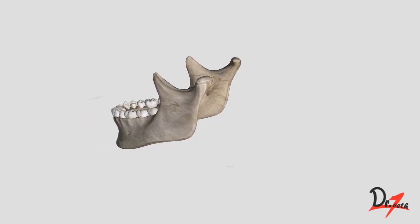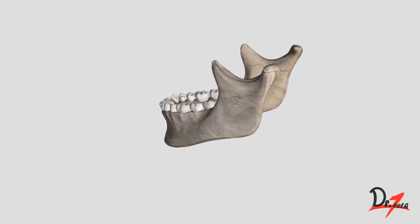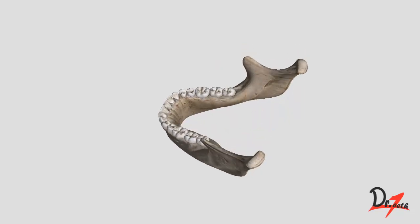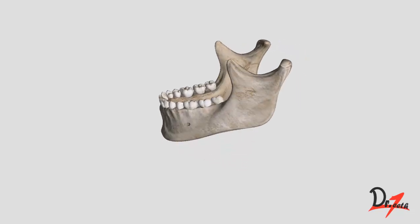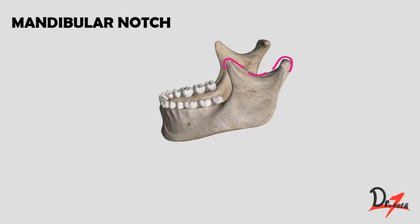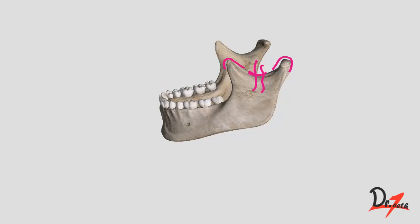The superior border of the ramus is thin, with an anterior and a posterior process separated by the mandibular notch. The masseteric nerves and vessels pass over this notch.